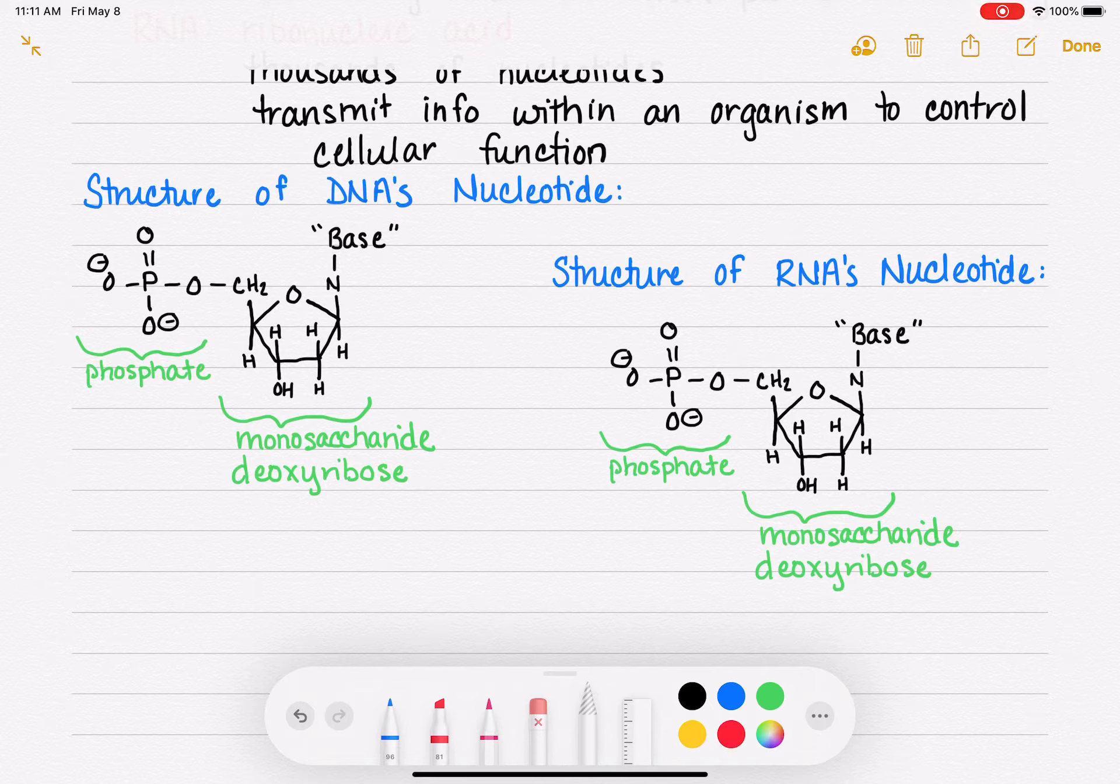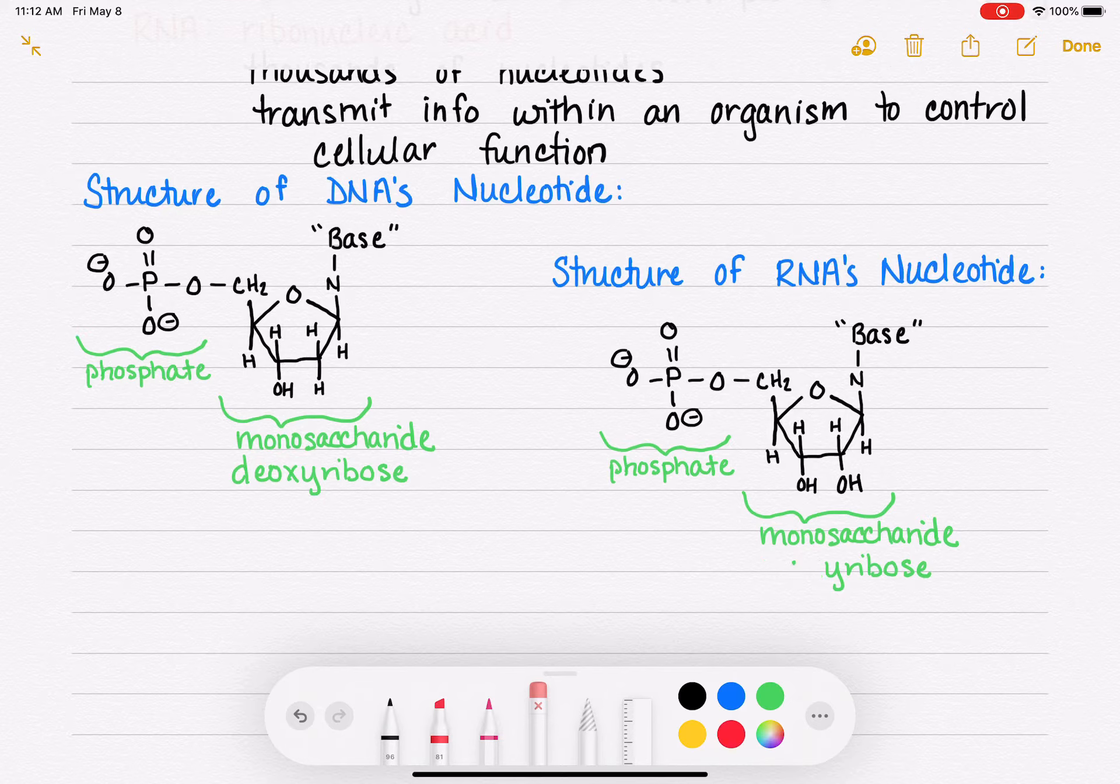the only thing that's different in RNA is the sugar, which has an OH group where we would expect to see one. And then because that OH group is there, the monosaccharide is ribose, not deoxyribose. Other than that, the two structures of the nucleotides in DNA and RNA are exactly the same.